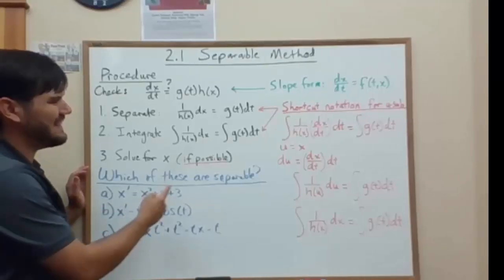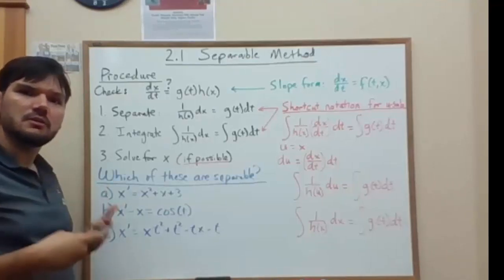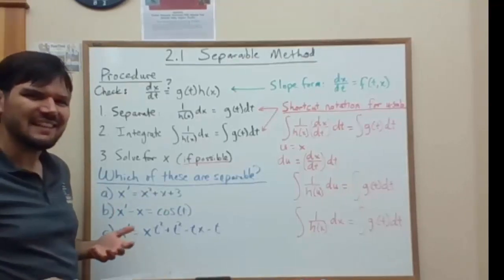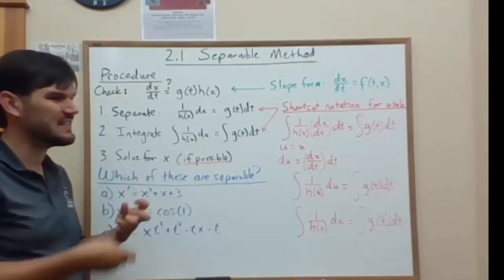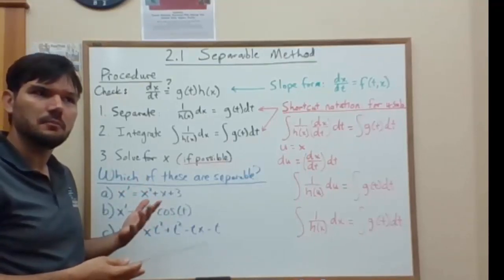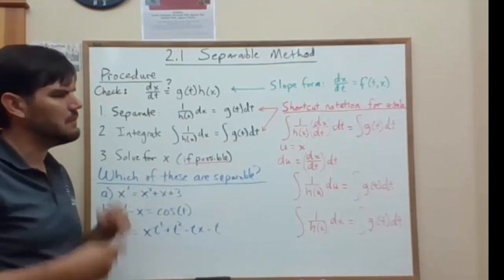But this form is actually a shorthand for a u-substitution. We technically can't break a derivative apart into its two components, dx and dt, like this. But it's the same as a u-substitution. Let me show you.